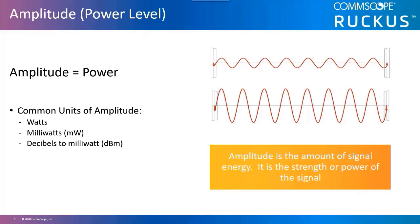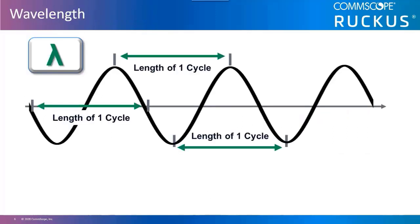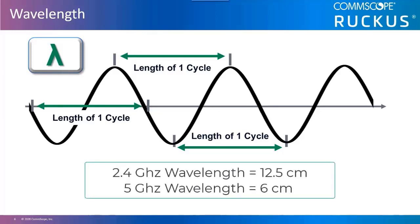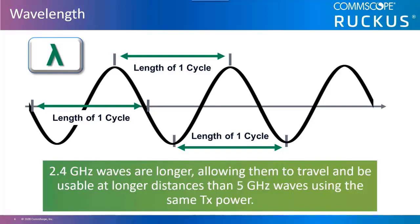Wavelength is the distance traversed during one oscillation or cycle. This can be measured at any point in the waveform so long as it is measured at the same point on each oscillation. The lambda symbol is used to represent wavelength. Wavelengths of RF signals used in wireless networks can be physically measured in centimeters. 2.4 gigahertz waves are longer, allowing them to travel and be usable at longer distances than 5 gigahertz waves when using the same transmit power.